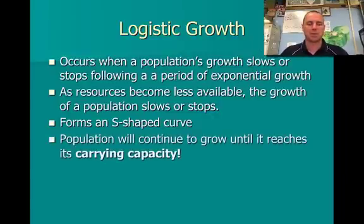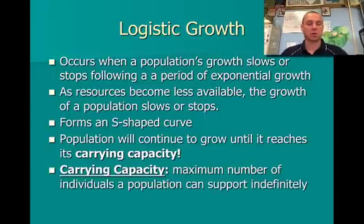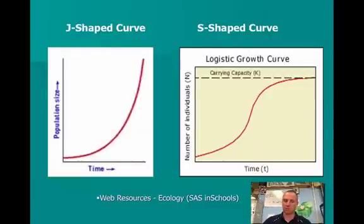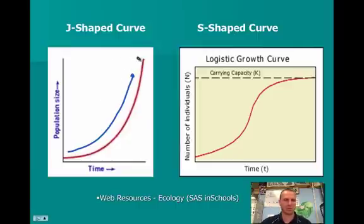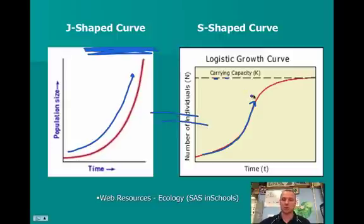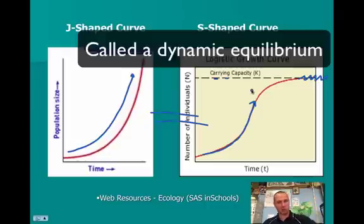Carrying capacity is the maximum number of individuals the population can support indefinitely. Let's explain both curves on this graph. The J-shaped curve shows a population growing without limits — nothing is stopping it, it continues to grow. But most populations will eventually hit a plateau where they can't continue to grow due to limited resources — that leads us to the logistic growth curve. That plateau is represented by K, the carrying capacity. The first part of the logistic growth curve is actually an exponential or J-curve, but as it gets closer to K, it starts to flux up and down. As you go above the carrying capacity, individuals die off; as you go below, it grows again. This continuous fluctuation is called dynamic equilibrium.